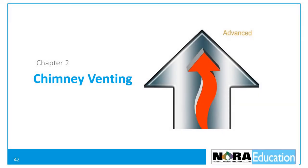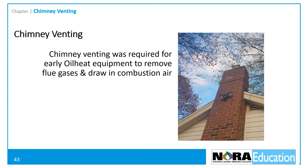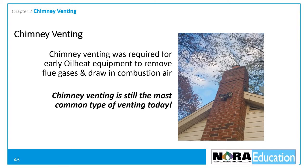Chapter 2: Chimney Venting. Chimney venting was required for early oil heat equipment to remove the flue gases from the building and to draw in combustion air. It is still the most common type of venting for oil heat systems in use today.